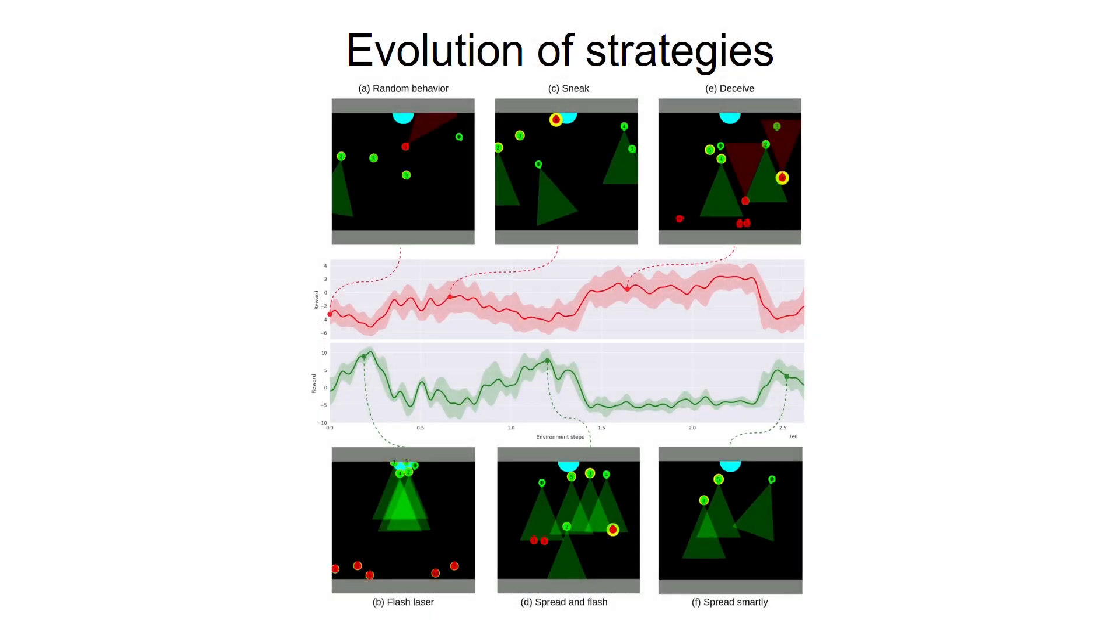We train our agents using proximal policy optimization. The reward for guards is roughly a mirror image of the reward for the attackers as victory for one team means defeat for the other. The rewards oscillate with multiple local extrema. These extrema correspond to increasingly complex strategies that evolve naturally.